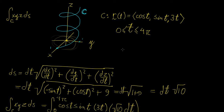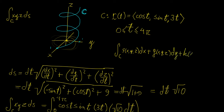You will also see line integrals written in another form: something like P(x, y, z) dx plus Q(x, y, z) dy plus R(x, y, z) dz, where P, Q, and R are functions of three variables. This is another way in which a line integral can be expressed.